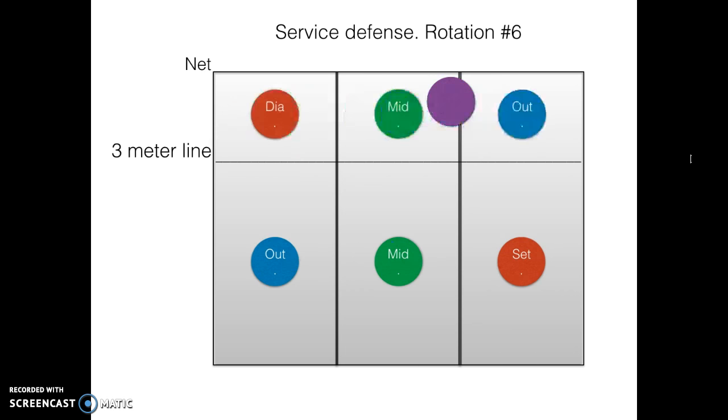Rotation six. Also pretty easy. Setter just moves out of the pass and the outside takes over. Alright, so after receiving the service, everybody goes back to their natural position as I showed you.